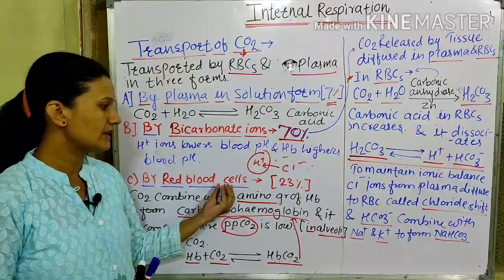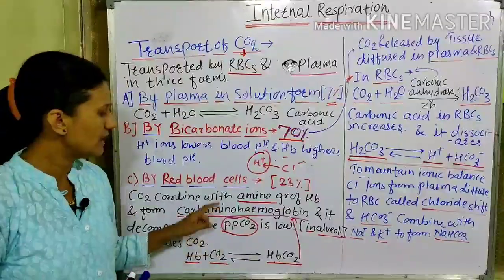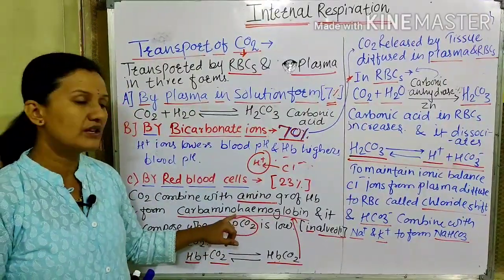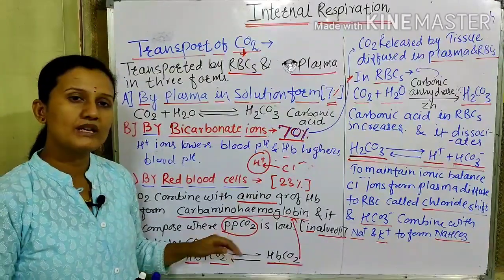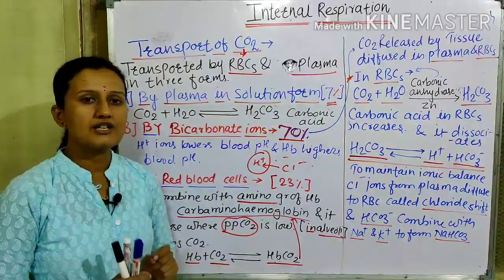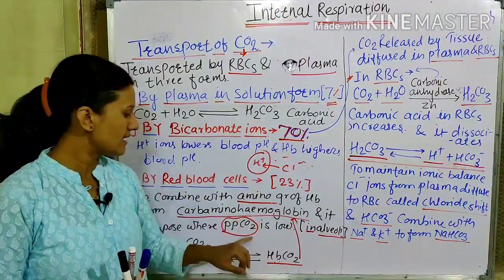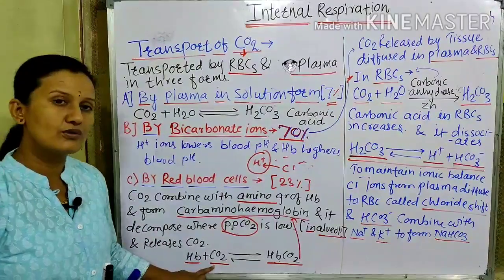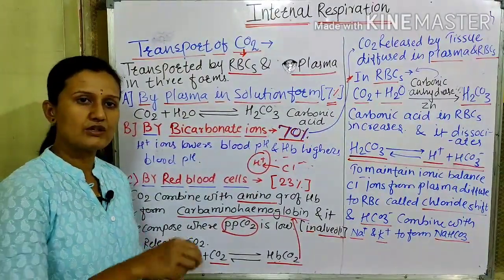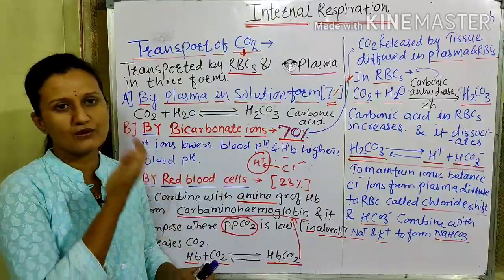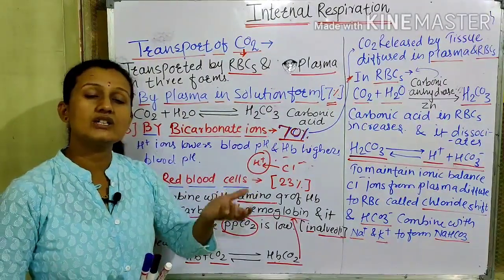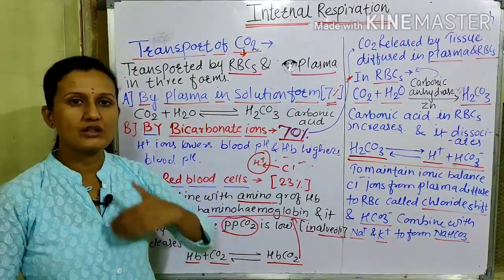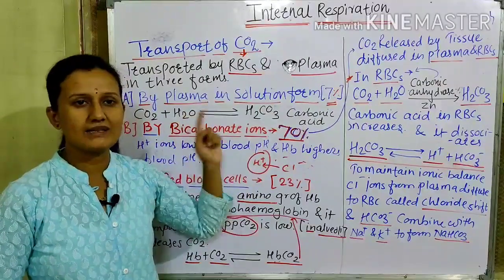Inside RBCs, CO2 added with the amino group of hemoglobin forms carbaminohemoglobin. That carbaminohemoglobin breaks down where partial pressure on CO2 is low — inside the alveolar sacs, partial pressure on CO2 is low, and carbaminohemoglobin dissociates into Hb and CO2. Hb releases CO2 into the alveolar sacs, picks up O2, and transports it to the lungs and to every tissue of the body. CO2 exits through the lungs by expiration and exhalation.